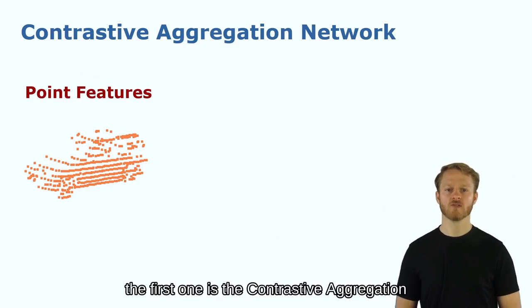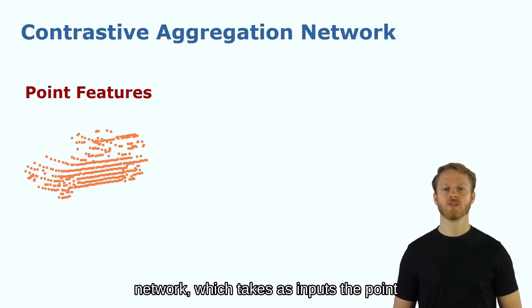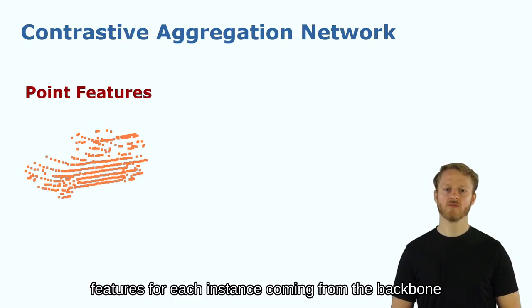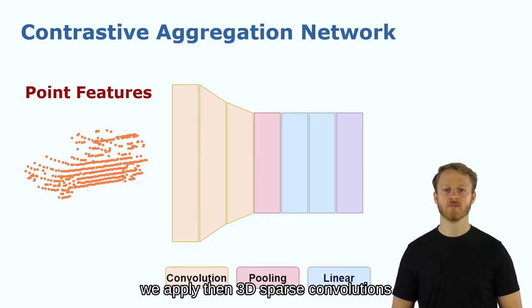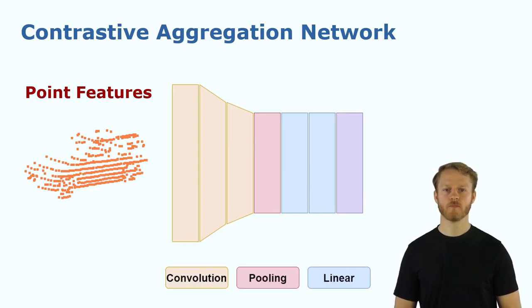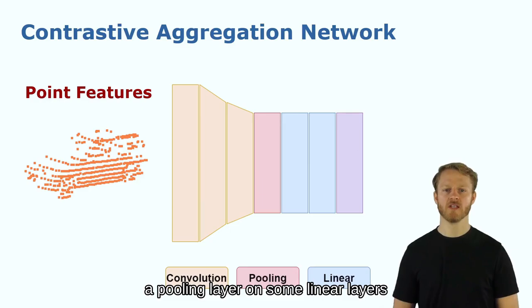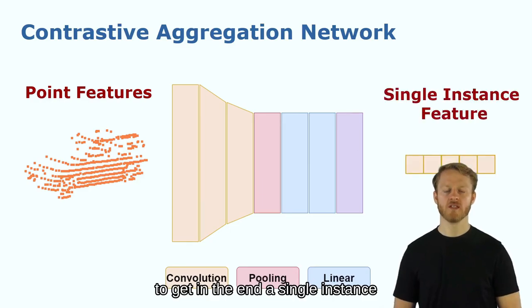The first one is the contrastive aggregation network which takes as inputs the point features for each instance coming from the backbone. We apply then 3D sparse convolutions to learn from the features and the shape of the object, a pooling layer and some linear layers to get in the end a single instance feature.